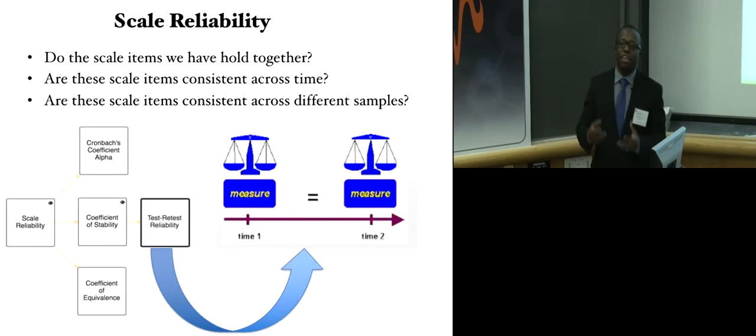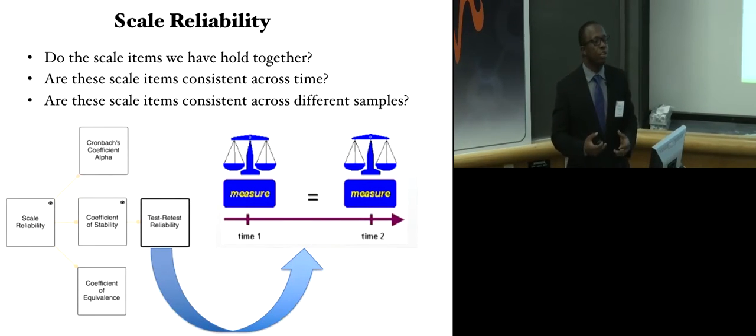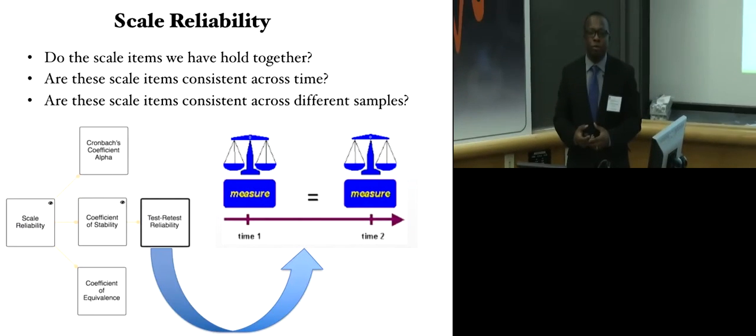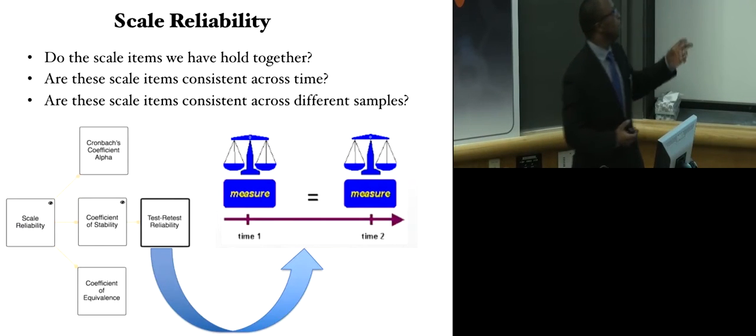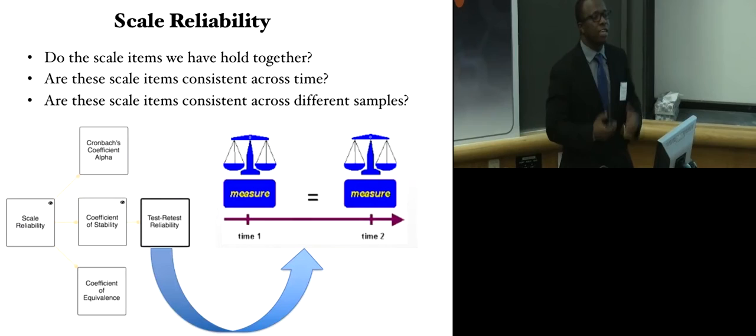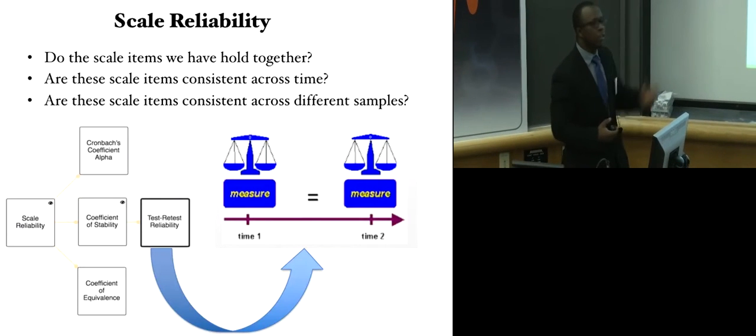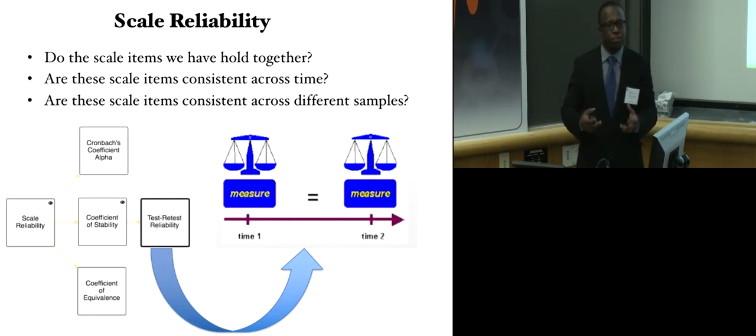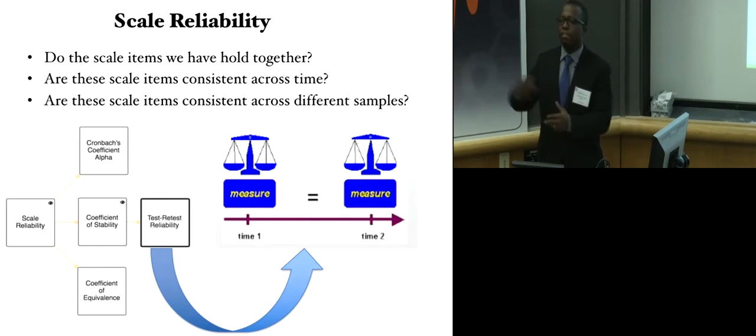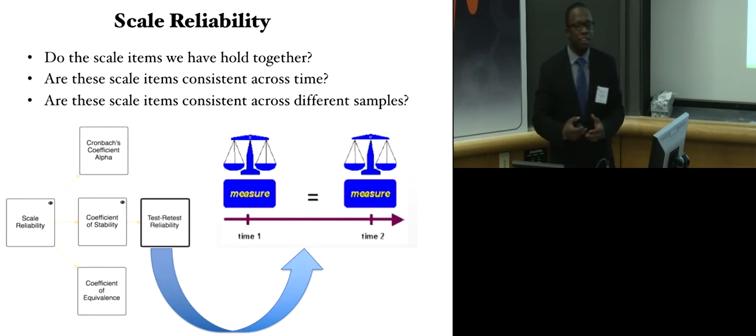Once your scale has been developed, once you know the different dimensions, you also want to make sure that this set of items are reliable. In terms of testing for reliability, there are different perspectives. We can look at Cronbach's alpha, that looks at the internal consistency of it, but also coefficient of stability. With this, we look at test-retest reliability.